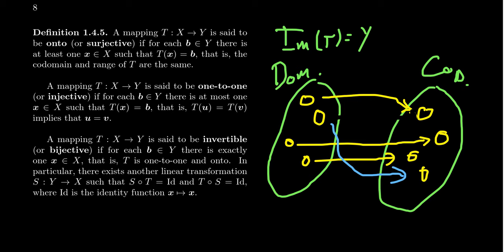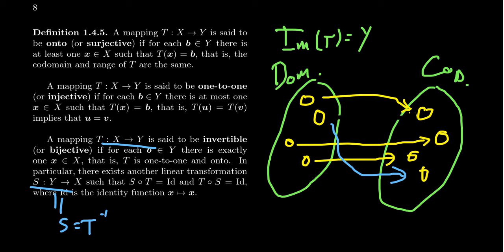What's interesting about bijective transformations — the reason why we call them invertible — is because they have an inverse. Every transformation that's bijective, there exists another transformation S, which is a map from Y to X. Notice the direction goes backwards. And when you compose S with T or T with S, you get the identity map, which sends every vector X to X. So S is T inverse, because the composition — they undo each other.